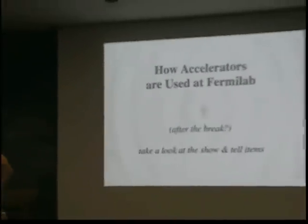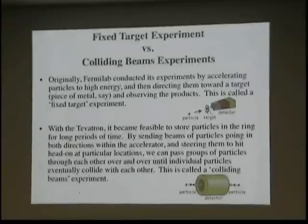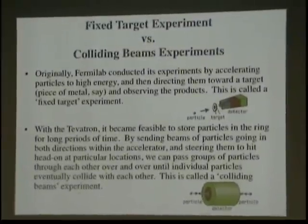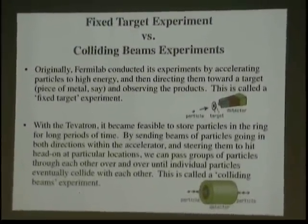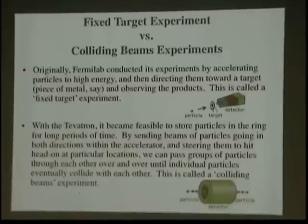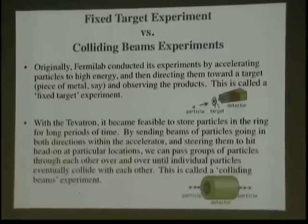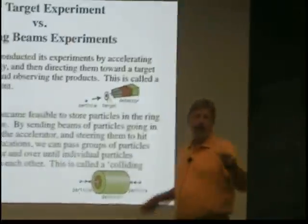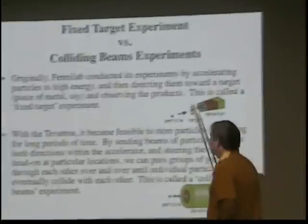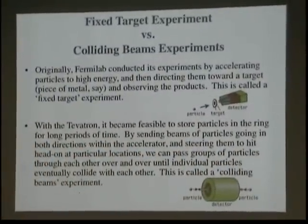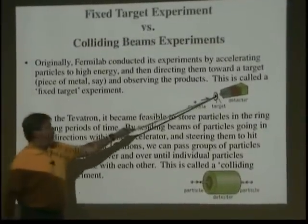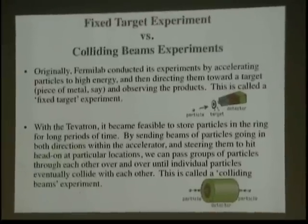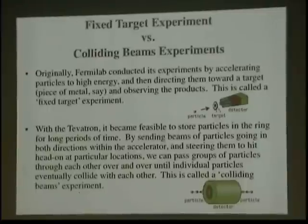So how do we use accelerators at Fermilab? Fermilab in its history has operated two kinds of physics programs: fixed targets and colliding beams experiments. Originally, we conducted experiments by accelerating particles in what was called the main ring to very high energy, sending them out of the machine and directing them towards target material. When the particles hit the target, a bunch of other stuff would be created, and we would have a detector downstream to see what was going on. We call that a fixed target experiment because the target was fixed — it didn't move — and the particles moved towards it.